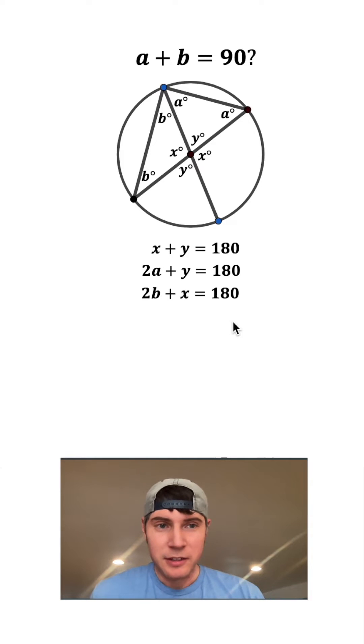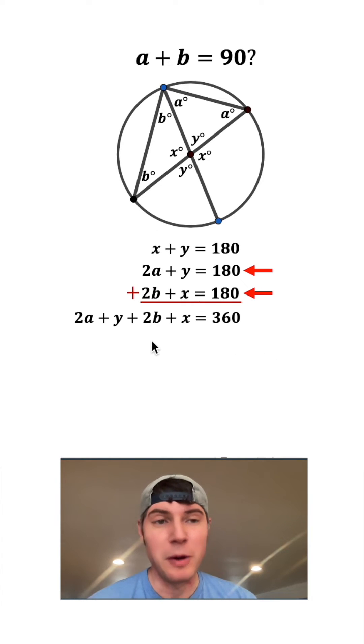So what are we going to do next? Let's take these two equations and add them together. 180 plus 180 gives us 360. And then 2A plus Y plus 2B plus X.